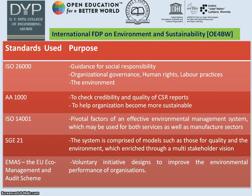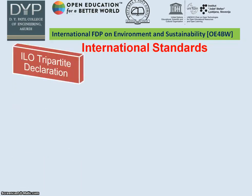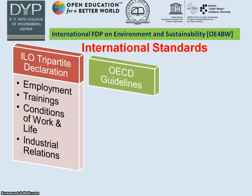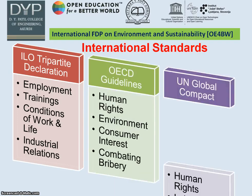These are the various standards. ISO 26000 provides guidance for social responsibility including organizational governance and human rights. AA 1000 checks credibility and quality of CSR reports and helps organizations become more sustainable. ISO 14001 covers pivotal factors for an effective environmental management system. SGE 21 talks about quality and environment through a multi-stakeholder vision. EMAS is a voluntary initiative designed to improve environmental performance of organizations. International standards include ILO tripartite declaration, OECD guidelines, and UN Global Compact.